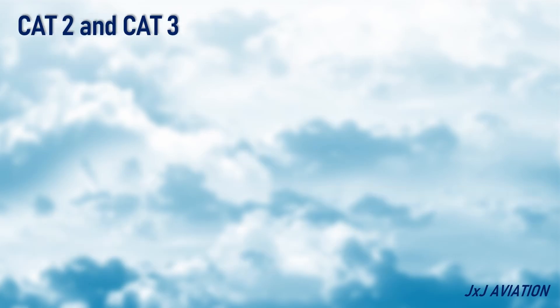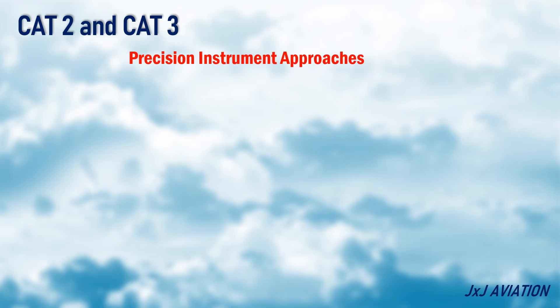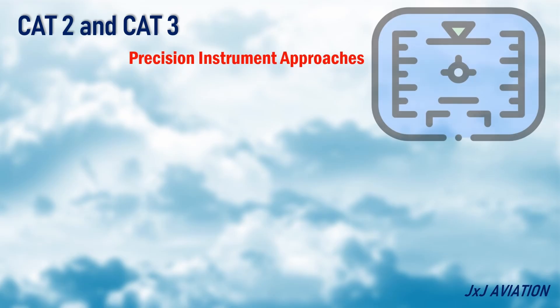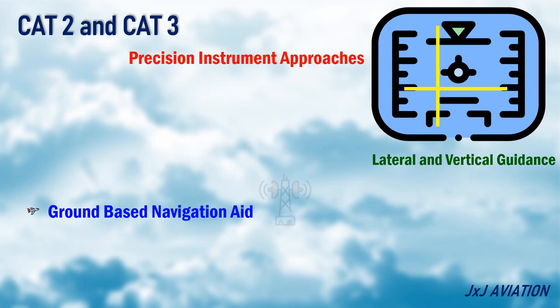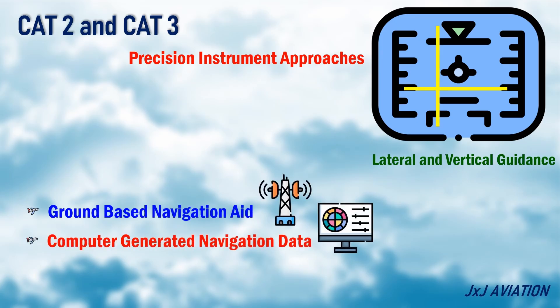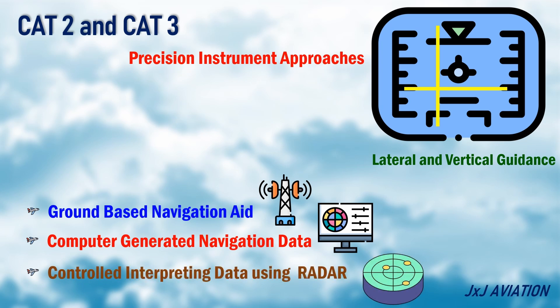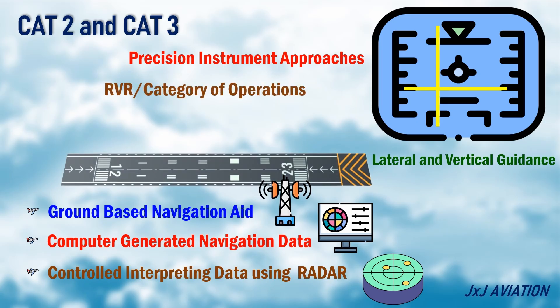CAT-2 and CAT-3 operations are precision instrument approaches. In this approach and landing, the aircraft uses both lateral and vertical guidance. The lateral and vertical guidance are provided by ground-based navigation aid, or computer-generated navigation data, or a controller interpreting data using radar. Depending on the RVR, or the category of operation, a decision height may be applicable.